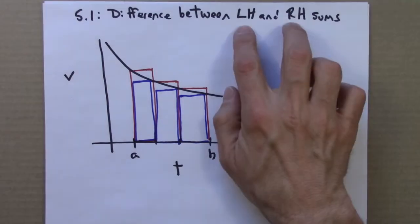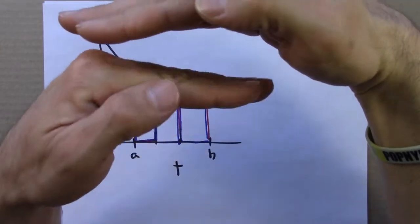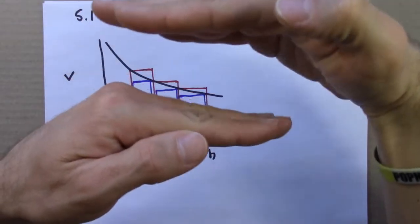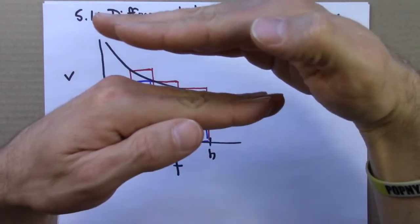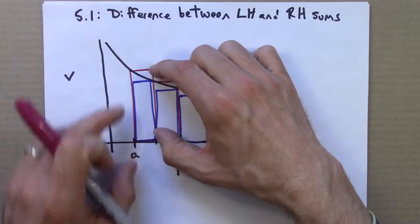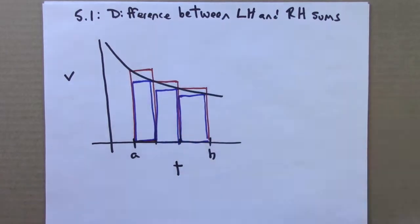So we want to know, what's the difference between these two? The idea here is that we're bracketing the true value between an upper estimate and an overestimate, and we'd like to know what's the difference between those. That'll tell us how accurate our guess is. So the difference, say, between the red rectangle, which is larger than the blue, is just this little thing here.